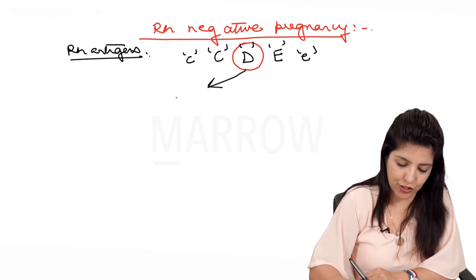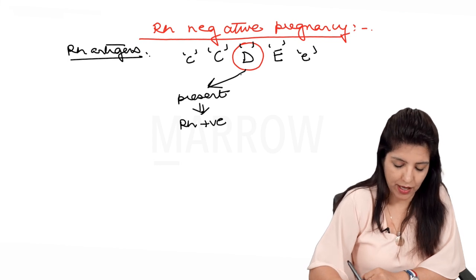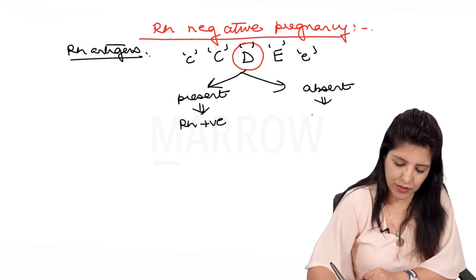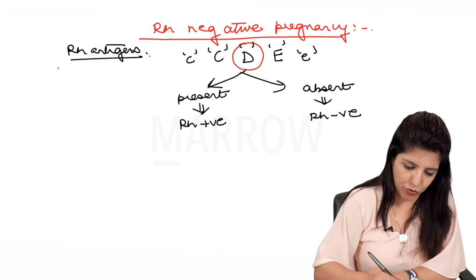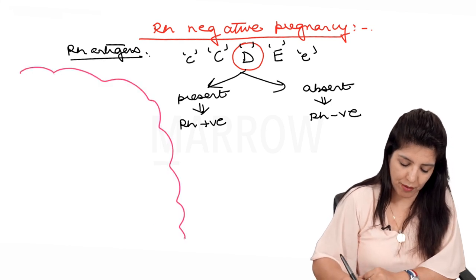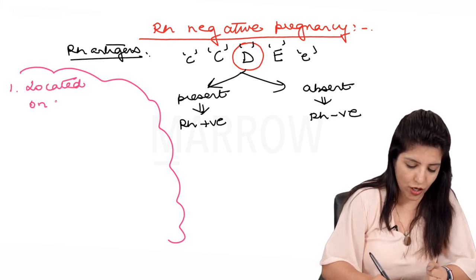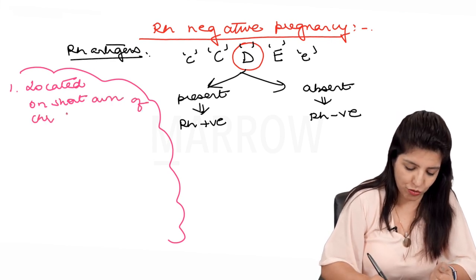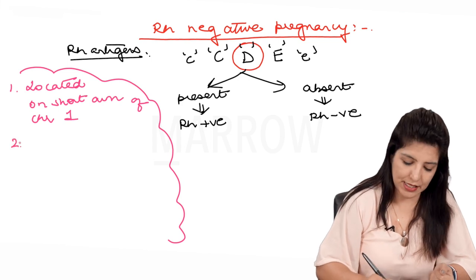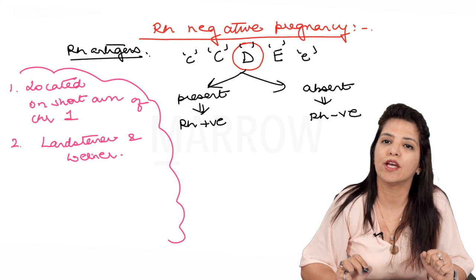If the capital D antigen is present, then we say the person is RH positive. If it is absent, then we say the person is RH negative. These RH antigens are located on the short arm of chromosome number one, and they were discovered by Landsteiner and Werner.